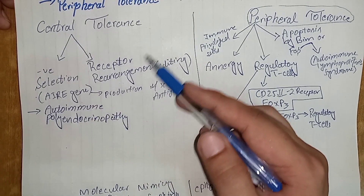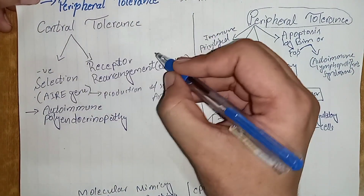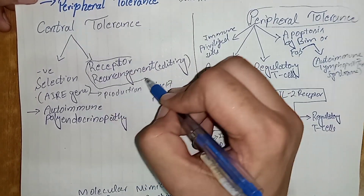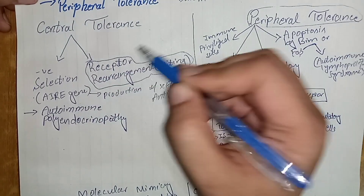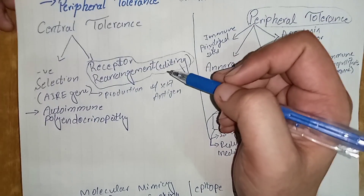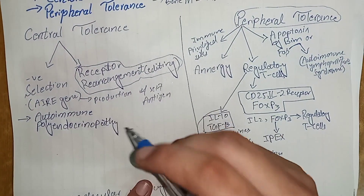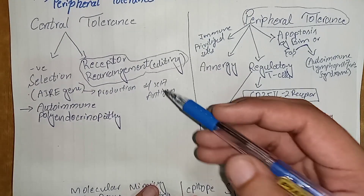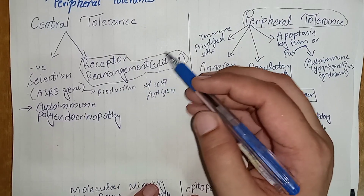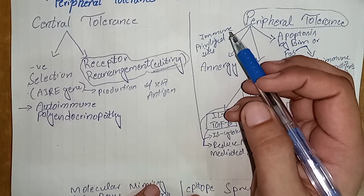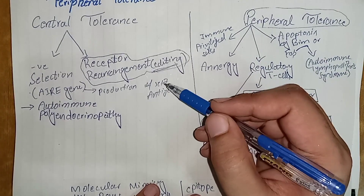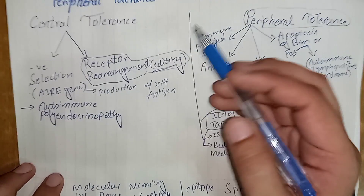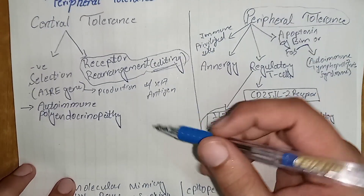Central tolerance for B lymphocytes occurs by two mechanisms: apoptosis and receptor rearrangement. If a B lymphocyte is found to have specificity for self-antigens, it is recognized and its receptor undergoes rearrangement, called receptor editing, so that it can no longer interact with the self-antigen. This receptor editing phenomenon is specific to B lymphocytes.